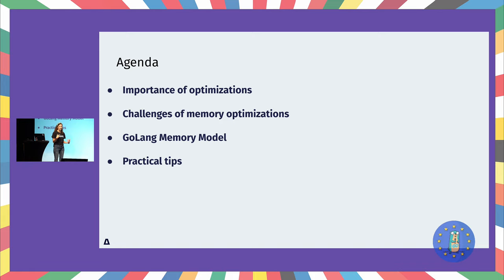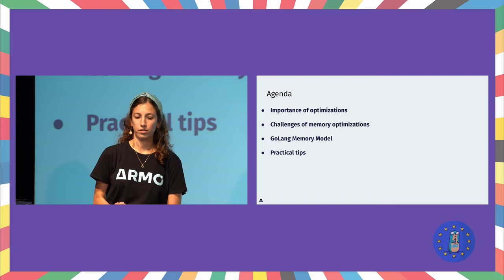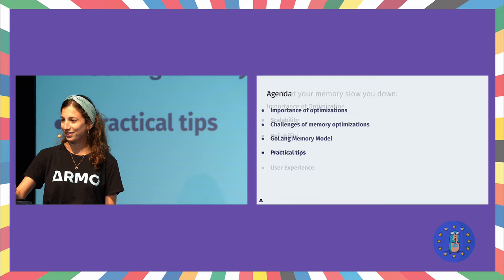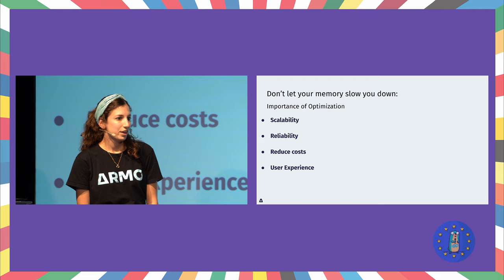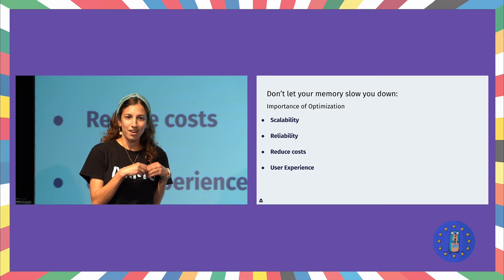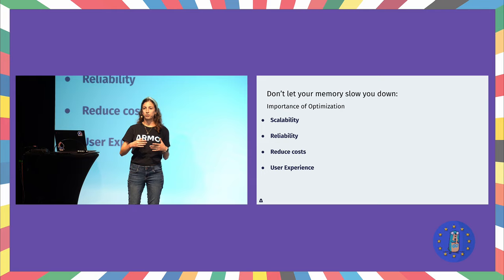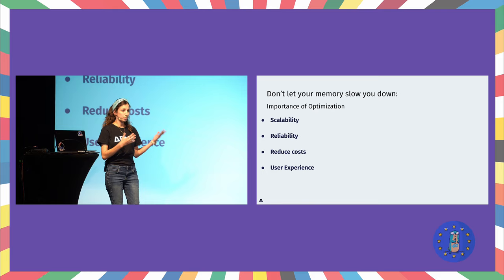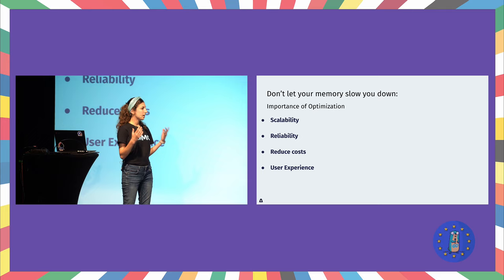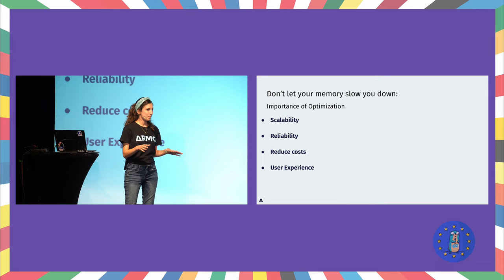So what we'll talk about: first, why is it important to optimize our code — why are we even investing time in doing this? Some of the challenges of memory optimizations in particular, a quick brief on the Golang memory model, and then our practical tips. So why is it important? First of all, scalability. We're writing an application — we want many users to run it, on many environments, on large environments. We want it to be reliable, to run smoothly, without unexpected behaviors, without errors, and definitely not out-of-memory errors.